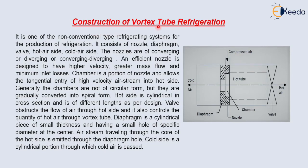Let's start with the construction of the vortex tube refrigeration system. It is one of the non-conventional type refrigeration systems for the production of refrigeration. The nozzle can be of converging type, diverging type, or converging-diverging type. An efficient nozzle is designed to have higher velocity, greater mass flow rate, and minimum inlet loss.